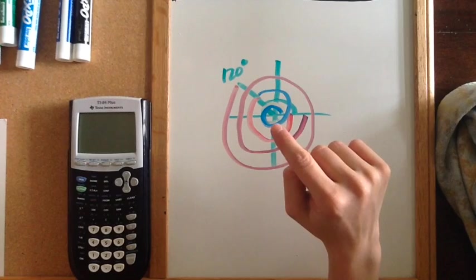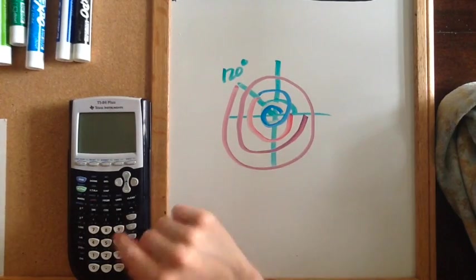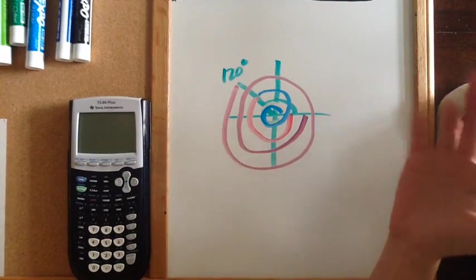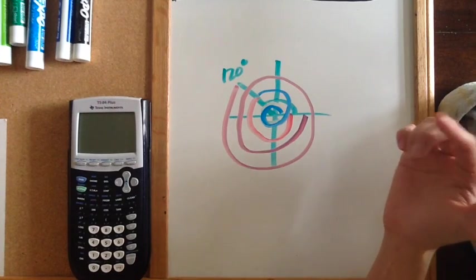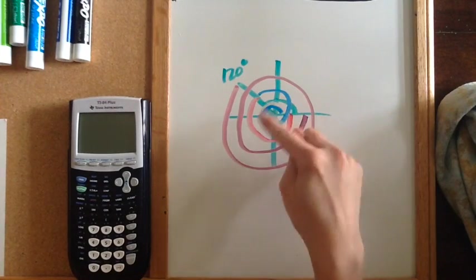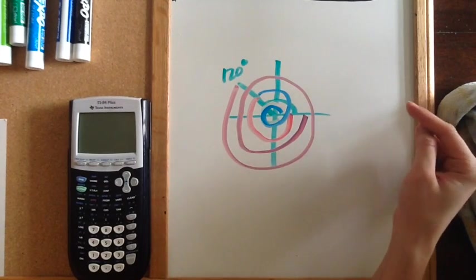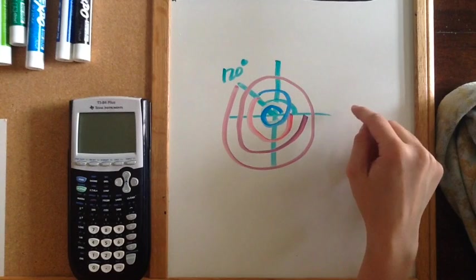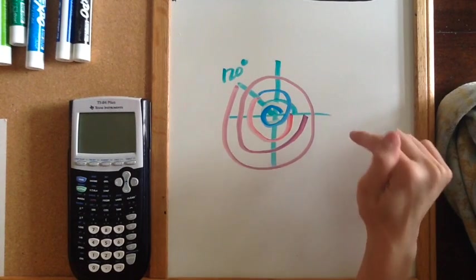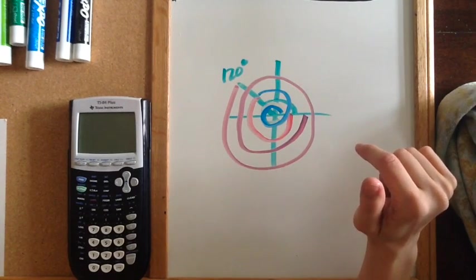So we can find coterminal angles by adding revolutions or subtracting revolutions depending on which direction we're going. A revolution in degrees is 360, a revolution in radians is 2π.